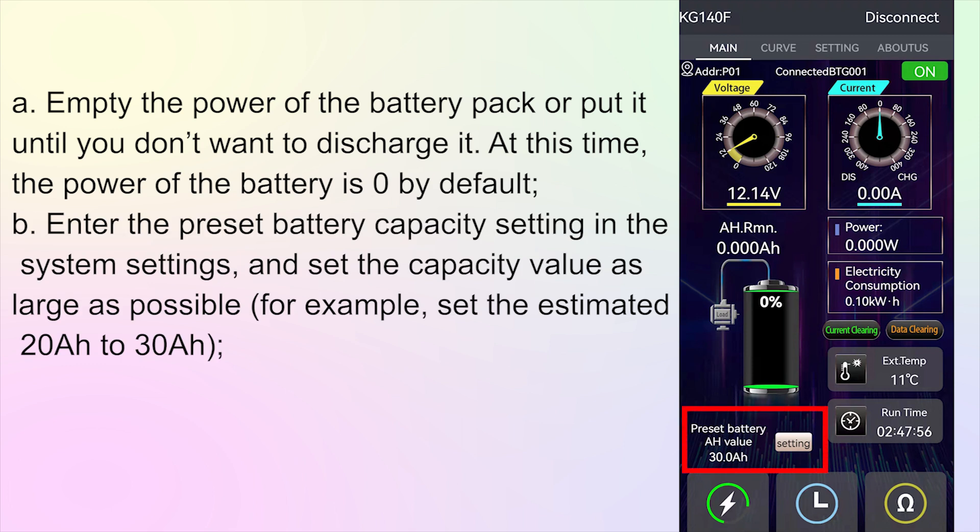B. Enter the preset battery capacity setting in the system settings and set the capacity value as large as possible, for example, set the estimated 20 ampere hours to 30 ampere hours.